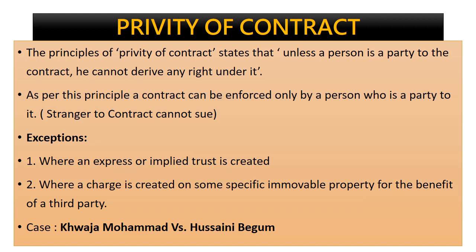If B failed to pay the amount, only A can take legal action — he has the right. Any other person such as C or D cannot take any legal action against the party. Only the two persons who are parties to the contract can take legal action in case of any losses. C is treated as a third person or a stranger to the contract, who cannot enforce the contract. But there are exceptions where a stranger to contract can also take legal action or enforce the contract.